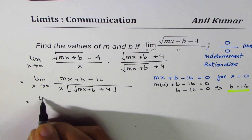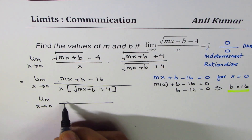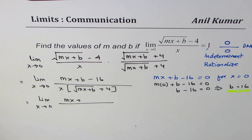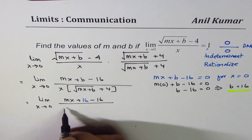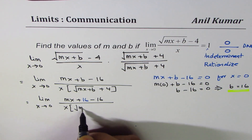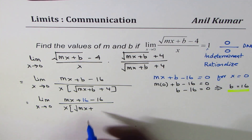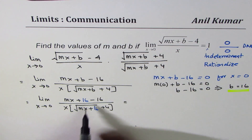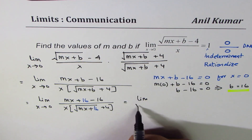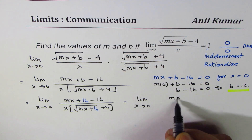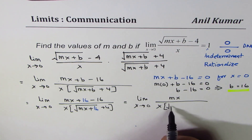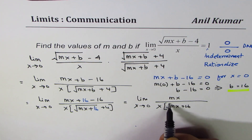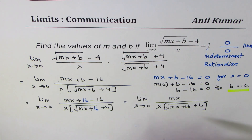Now I'll continue using b equals 16. We write the limit as x approaches 0 of (mx plus 16 minus 16) over x times (square root of mx plus 16 plus 4). Since 16 minus 16 is 0, the numerator simplifies to mx, which gives us mx over x times (square root of mx plus 16 plus 4).